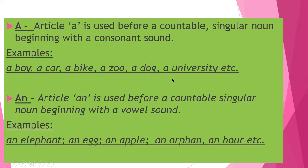Now about 'university' — here you can see 'U'. U is actually a vowel letter. But when we pronounce 'university', the sound is Y, like 'university'. We don't say 'university' with a U sound. So the sound is of Y, not U. So we need to follow the consonant sound, and that's why we use 'a university'.